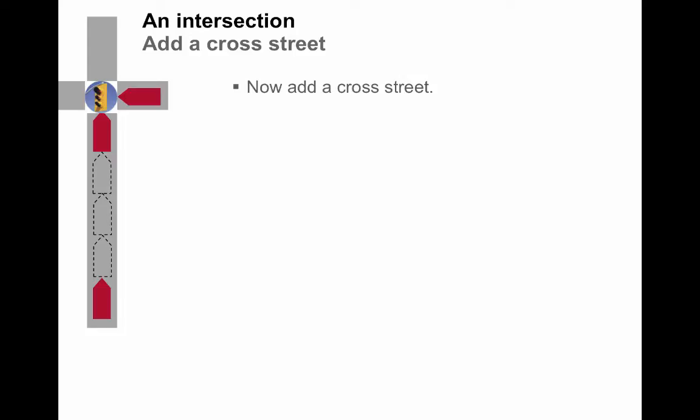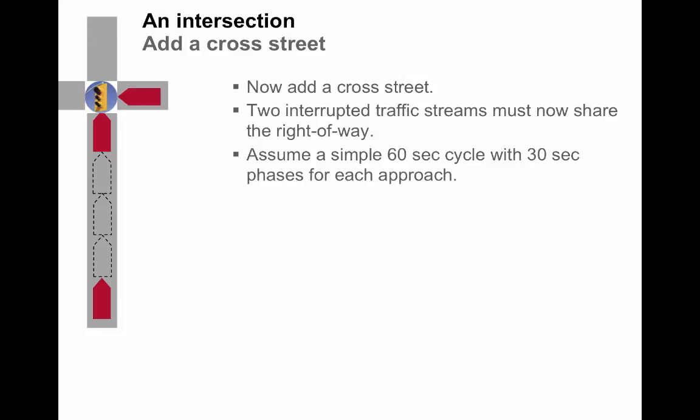So if this particular roadway is an arterial with traffic signals, as we often encounter, what happens when we add a cross-street? Basically, this creates two interrupted traffic streams that now must share the right of way in this intersection right here. And if it's controlled by a traffic signal, we can make some assumptions about how long the cycle is. Let's just say, for the sake of discussion, that we have a 60-second signal cycle and that there's a balanced set of flows with 30-second phases for each approach.